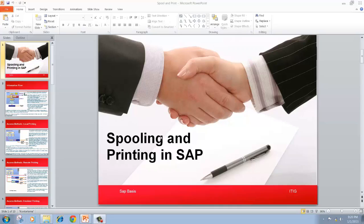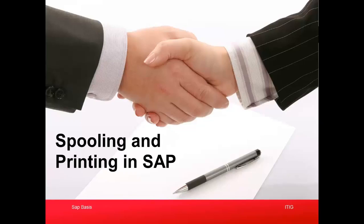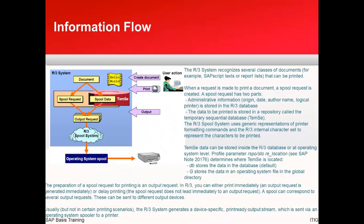In this training video, I'll be talking about how we can do printing and spooling in SAP and what is the method of printing in SAP. In this particular diagram, you can see how this particular SAP system, listed as the R3 system, handles printing. When the user tries to create a document and gives the print command, you can see how it goes to the TEMC spool request, then an output request is generated, and you have the chance to print it. Let's go through in detail about the breakup of each of these activities and how the printing flow happens.